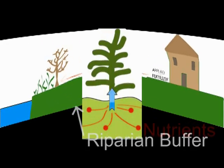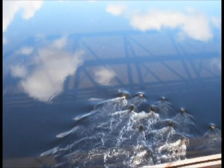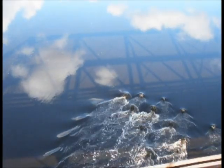In some forms, the nutrient pollutants found in fertilizers are taken up by plants and used for growth. When nutrients are used by plants, fewer can make their way into the river and the river stays cleaner.